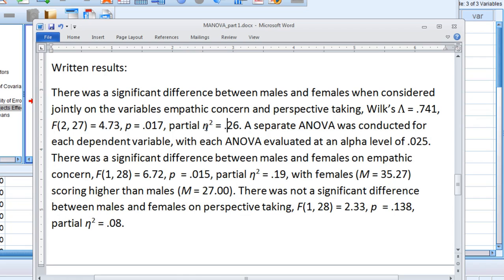And one last thing before we close here - partial eta-squared. We can think about this as being similar to eta-squared in the univariate case, in the ANOVA case. It's a little bit different in terms of how it's calculated behind the scenes,